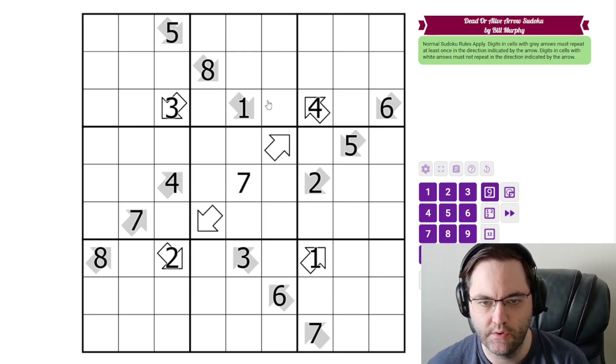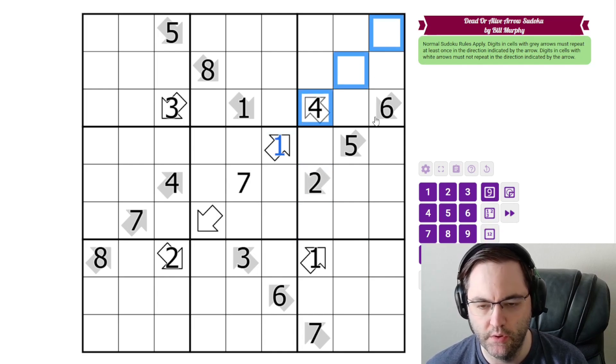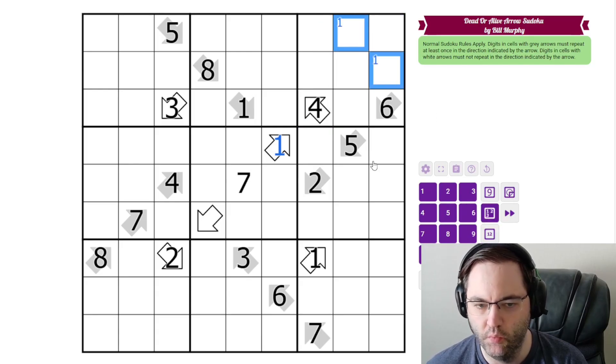Let's get started with that 1. This struck me as I was explaining the rules. 1 can't go here because of the white arrow, and 1 can't go here, and 1 is not 2. So this is a 1. And none of these are 1. None of these are 1. This is not 1. So 1 is going to be in one of these cells.